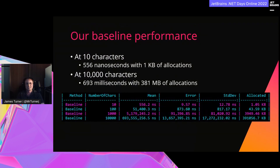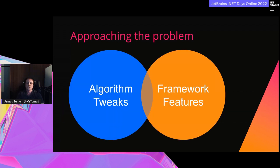At 10 characters it takes just under 600 nanoseconds and allocates about a kilobyte of memory — not bad. But at 10,000 characters we're taking over half a second and allocating 381 megabytes. Even if the time were acceptable, that memory usage is going to be brutal to performance. We can significantly improve both time and memory usage, but we need to work out how to approach the problem.